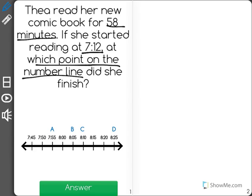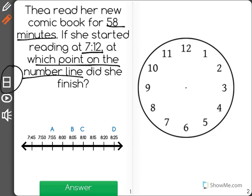I'm going to get out the clock from my toolbar over here to help solve this problem. Now, we know that she started reading at 7:12, so I'm going to show 7:12 on the clock. The hour hand will be here, and the minute hand will be there.